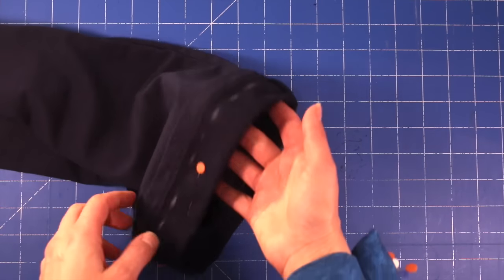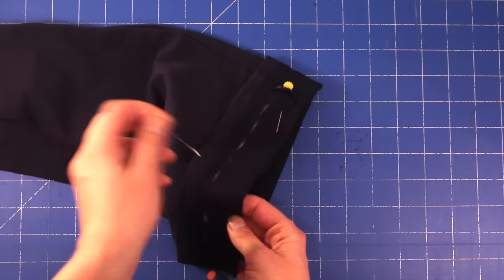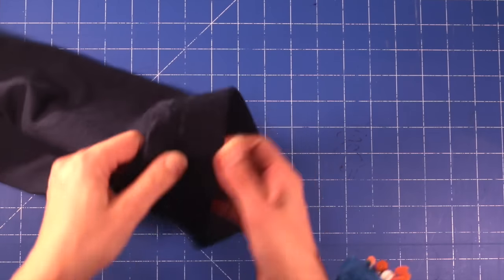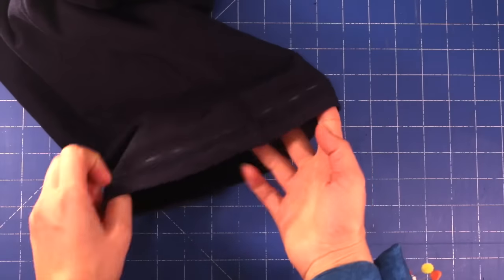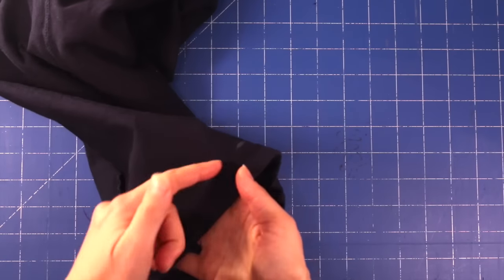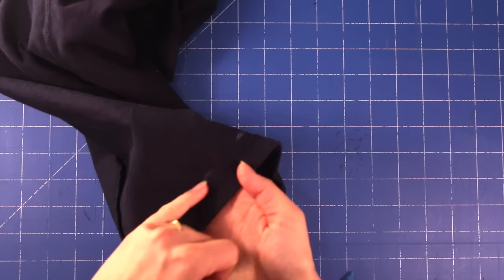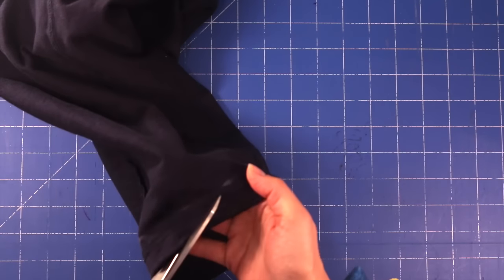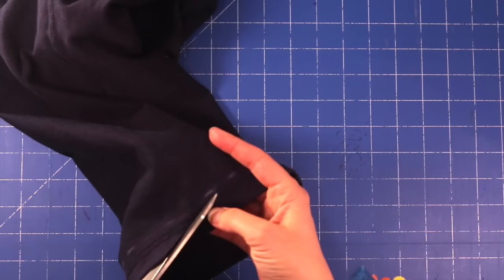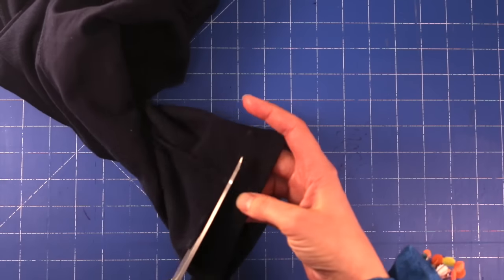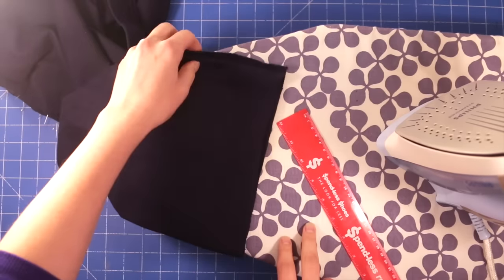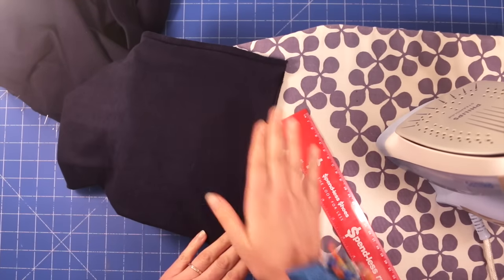So now that I've marked all the way around I can remove the pins and I'm going to turn the pants inside out. So now my pants are inside out. I'm ready to cut off this excess fabric that I don't need. For some people this can be the scary part. So now I've finished cutting off the excess fabric on my pant leg.